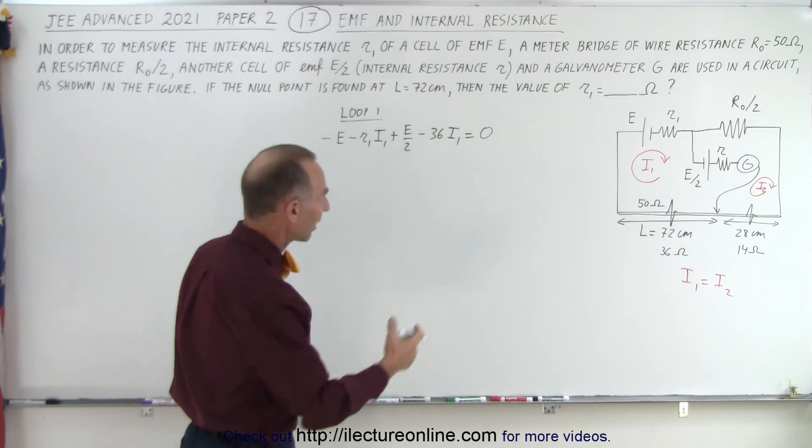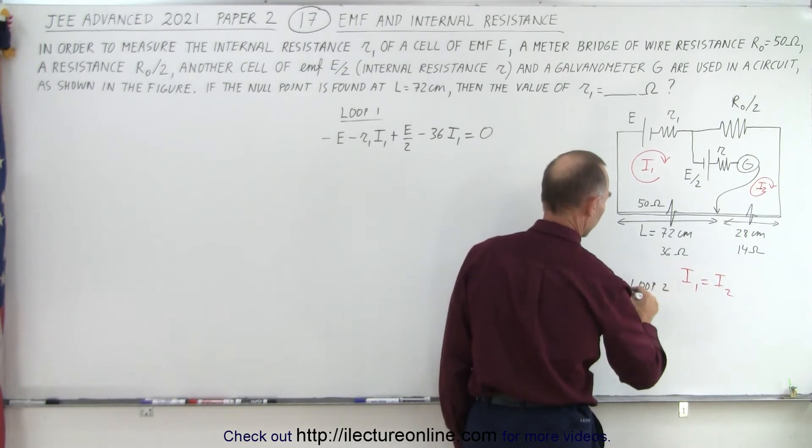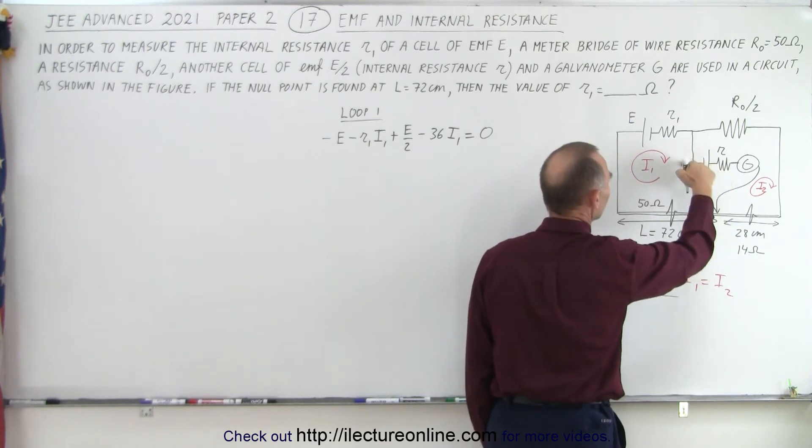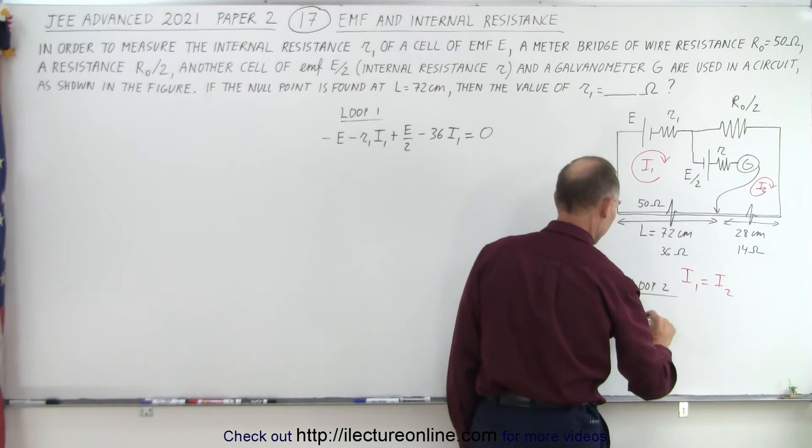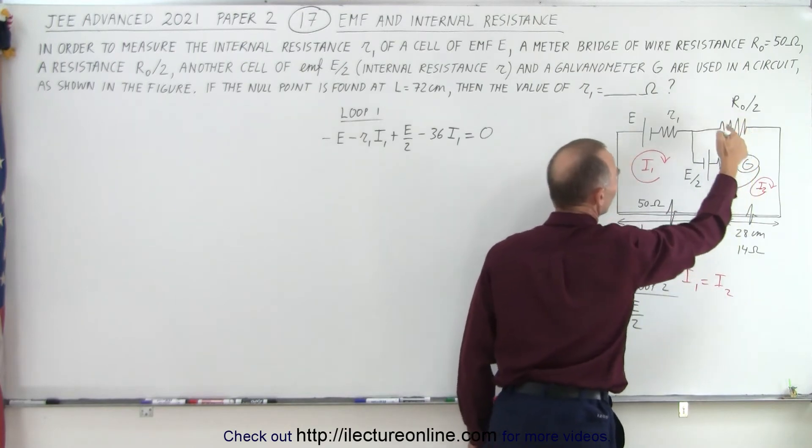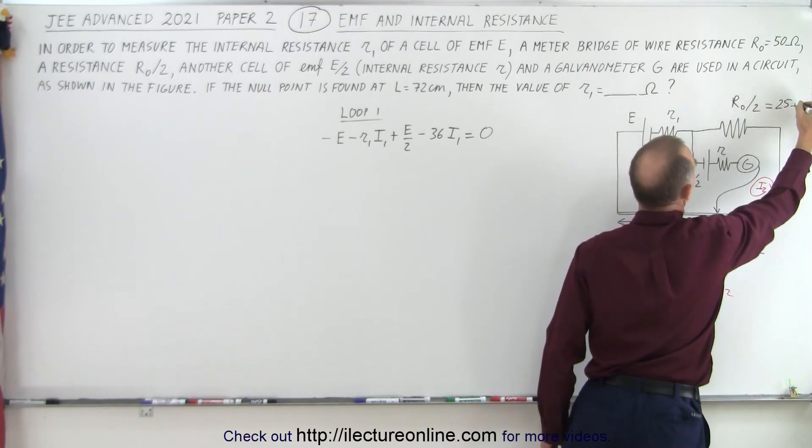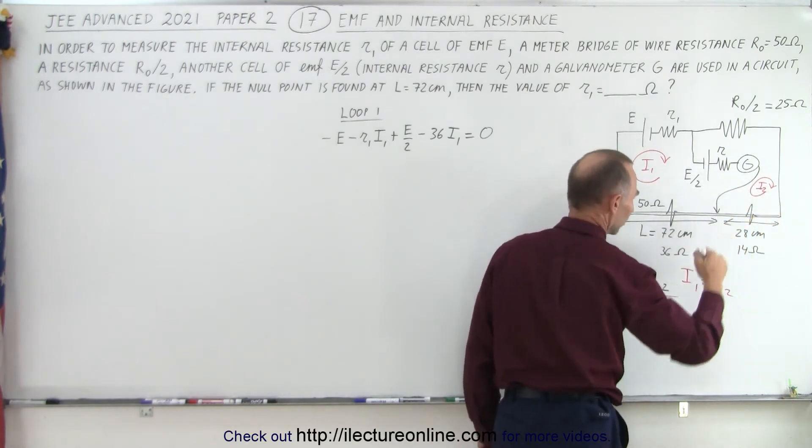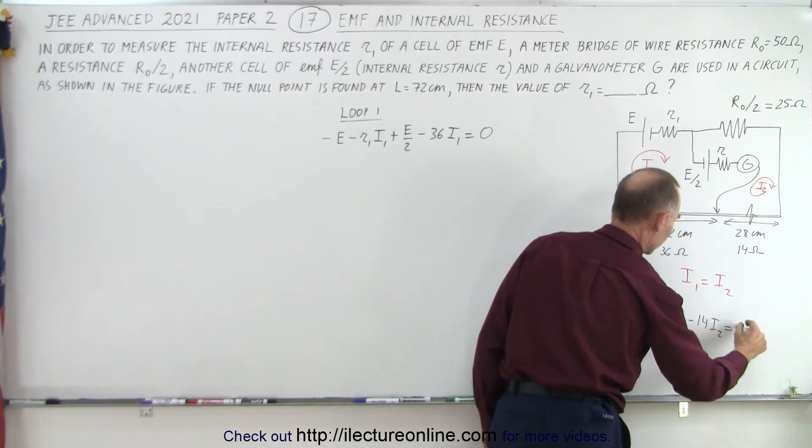We should do the same on the right side. On the right side, that's loop two. We go from here to here across E2 in the negative, from positive to negative, so that's minus E/2. Then we come across here across this resistor. Now this here is the 50 ohms divided by 2, so this is 25 ohms. So we have minus 25 times I2, and then we have a voltage drop here, that would be minus 14 times I2, which equals zero.